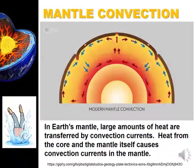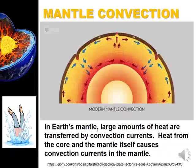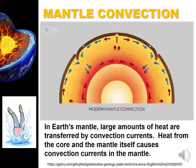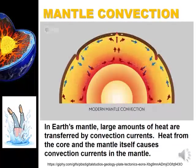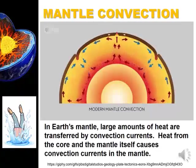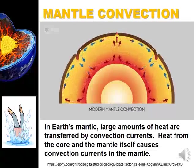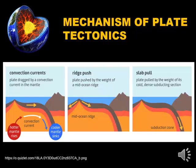But how does convection answer our big question — what makes lithospheric plates move? In the Earth's mantle, large amounts of heat are transferred by convection currents. Heat from the core and the mantle itself causes convection currents. Convection is driven by heat from the core and involves either the whole mantle or convection cells within the plastic asthenosphere. Upwelling in the convection cells occurs under the Earth's divergent plate boundaries, and cooler material sinks at the convergent boundaries. The lithospheric plates are dragged along by the horizontal flow of the asthenosphere, like a conveyor belt.